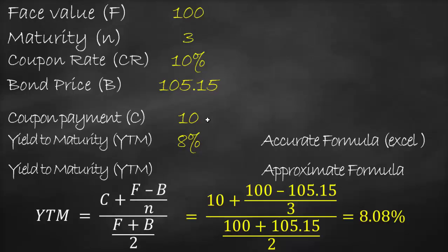This gives us an approximate yield to maturity of 8.08%. The accurate answer is 8%, so it is very close. If you don't have Excel and only have pen and paper, you can use this approximate formula to find the approximate yield to maturity.